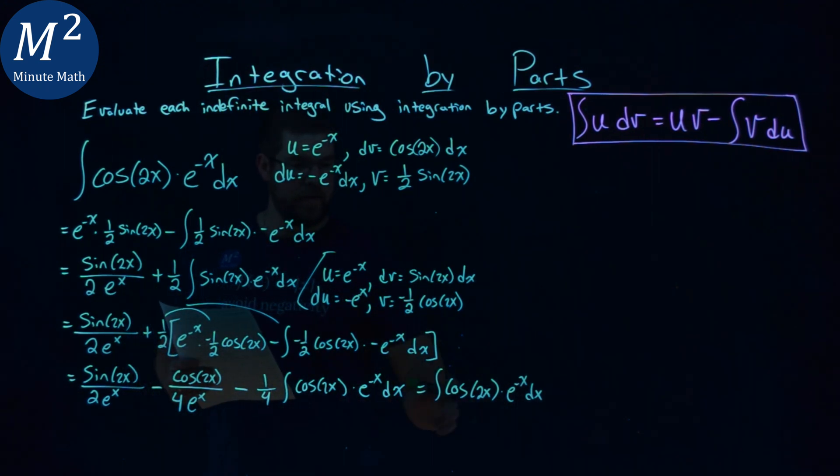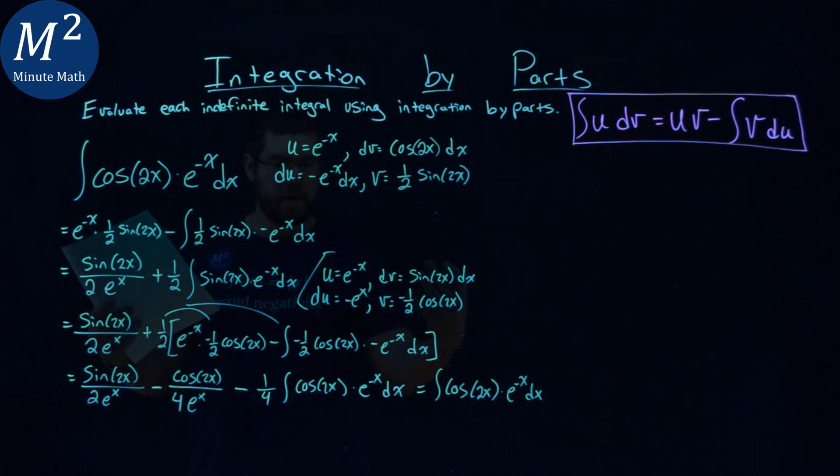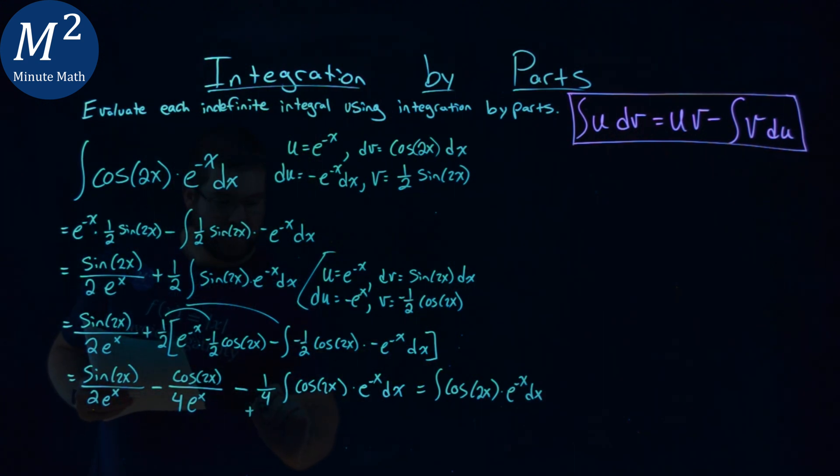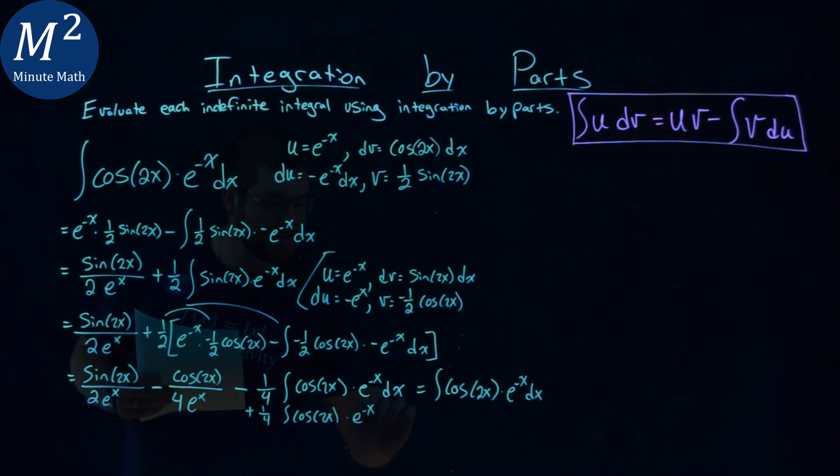But what happens if we actually add that to both sides? We add this one-fourth of that whole thing. Remember, this is all one big integral. We can do that. So I'm going to add that one-fourth integral of cosine 2x times e to the negative x dx to both sides.